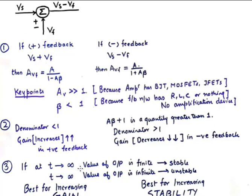If at T approaching infinity, the output of the device is finite, then the system is stable. So there is one criteria for stability. And if at time approaching infinity, the value of output is infinite, then the system is unstable.